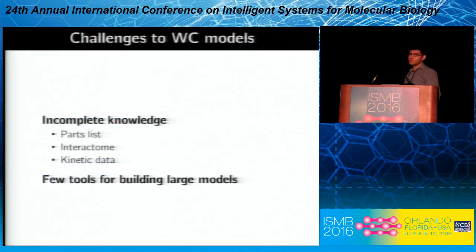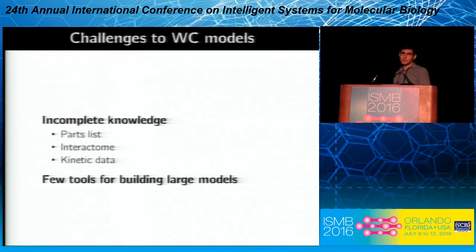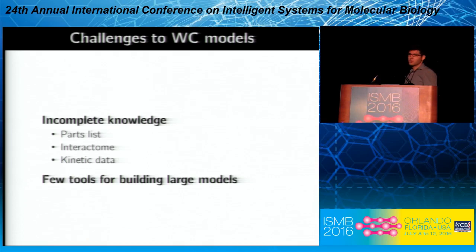People have been interested in wholesale models for a long time, and there have been two major challenges which have limited progress until recently. The first is that we have incomplete knowledge about biology — we still don't have complete part lists, we don't know how all of the parts interact with each other, and we certainly don't have kinetic data describing every aspect of cellular systems. The second major limitation is that we've had few tools for building very large-scale models.